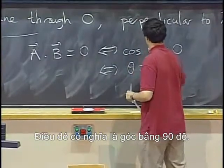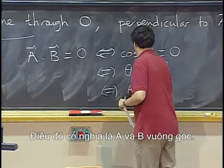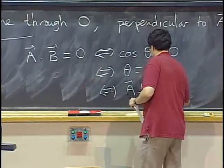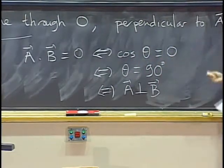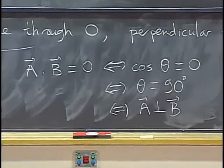That means the angle is 90 degrees. That means A and B are perpendicular. So we have a very fast way of checking whether two vectors are perpendicular.